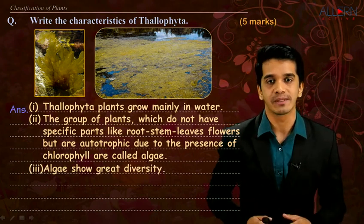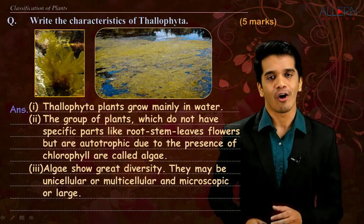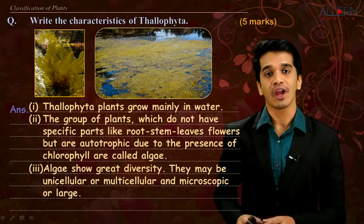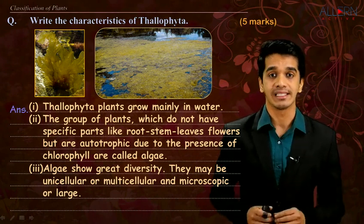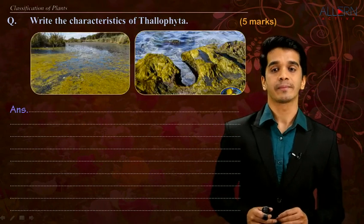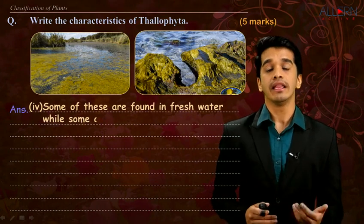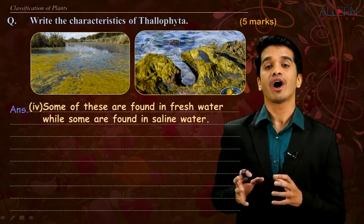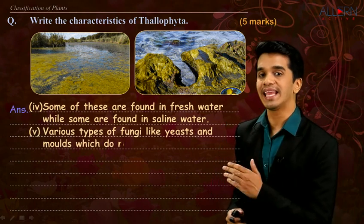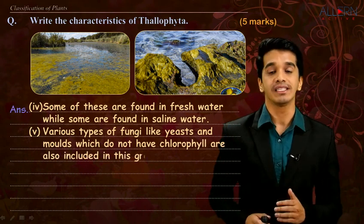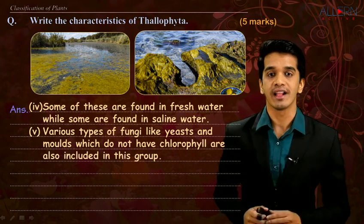They can be unicellular or multicellular, or microscopic, or they can be larger in size — that means you can see them with your naked eyes. They can be found either in fresh water or in saline water. Various types of fungi like yeast and mold do not possess chlorophyll, but still they are included in the group of thallophyta.